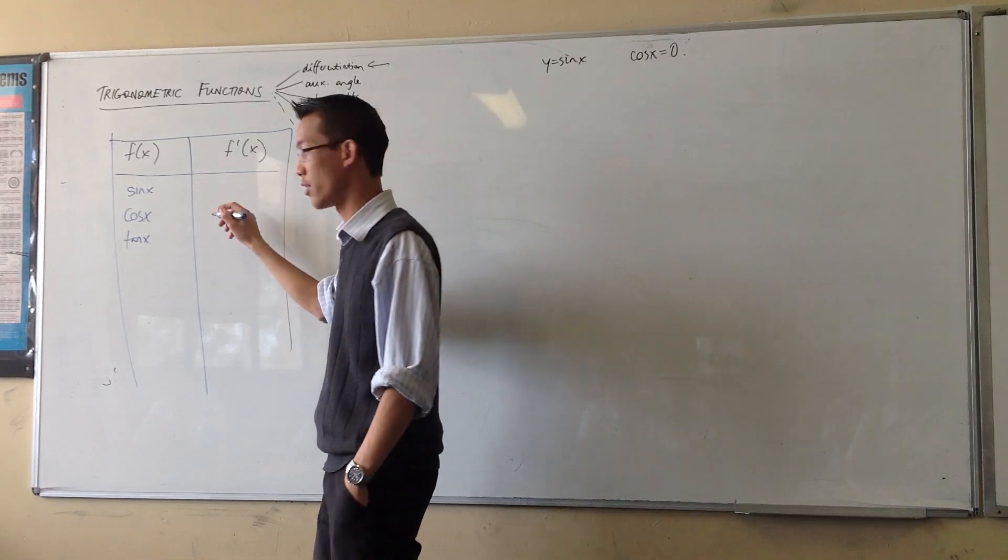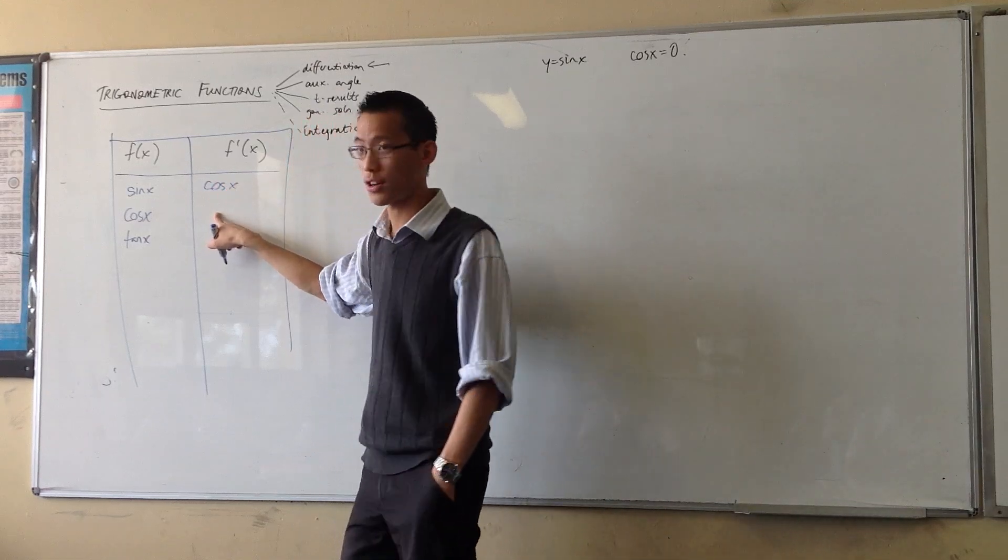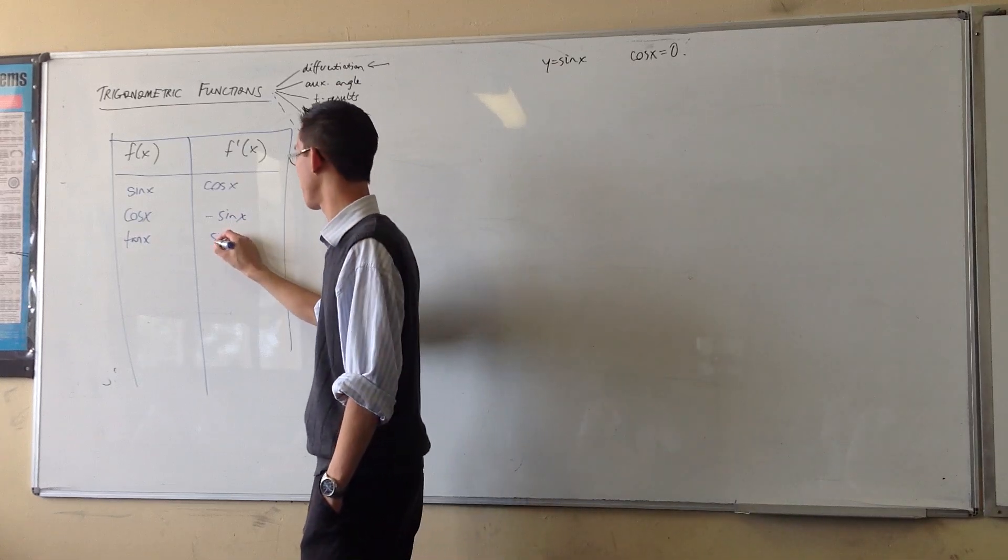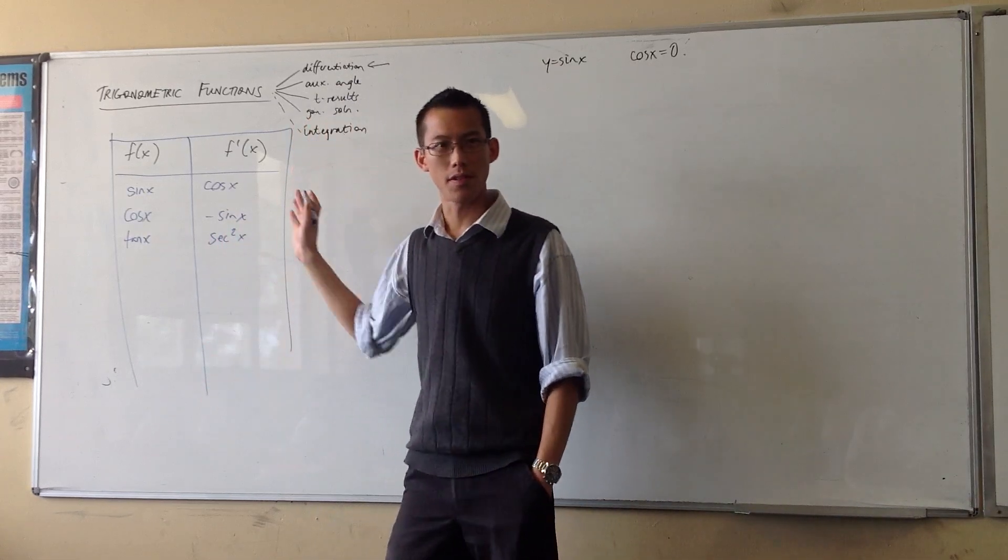Derivative for sine is? Cos. Good. Derivative for cos? Minus sine. Derivative for tan? Sec squared. Yes. Okay. So they're all fine. Right?